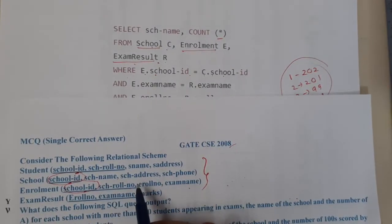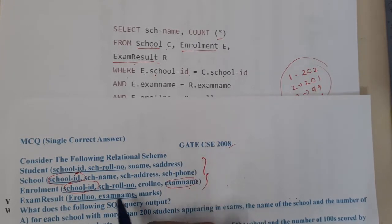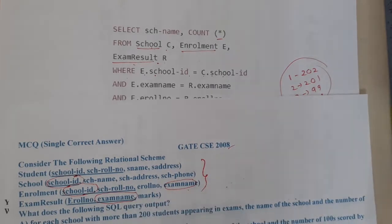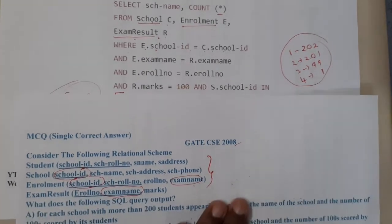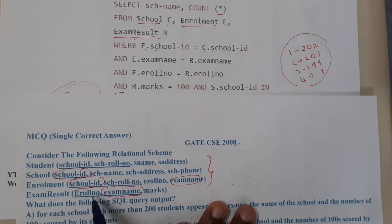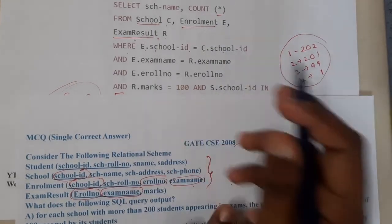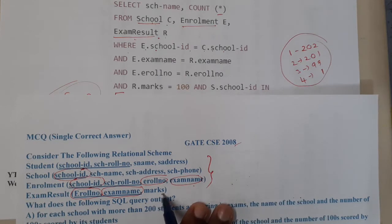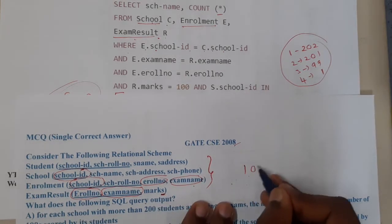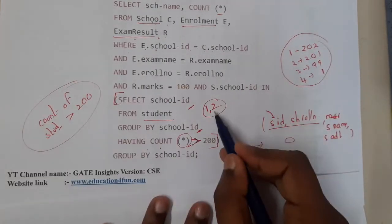Similarly, we join on E dot exam name — that is enrollment dot exam name — with R dot exam name, which is exam result dot exam name. We also join on E dot roll number with R dot roll number. Finally, we check where R dot marks equals 100, so we are finding students who scored exactly 100 marks.